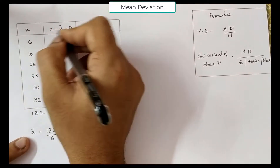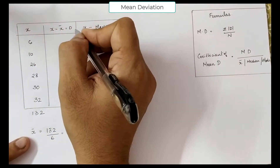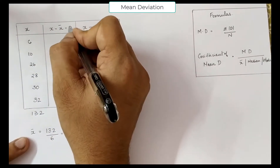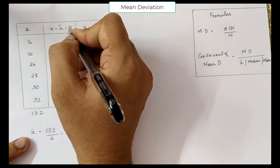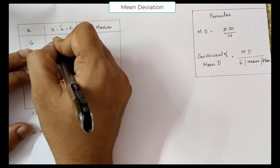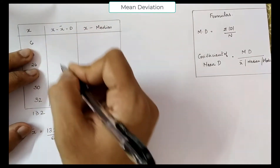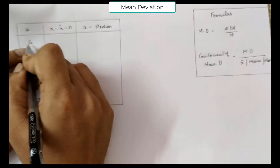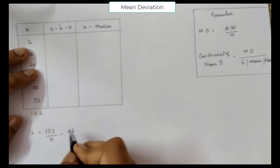Now, what is the mean deviation? That is called D. Here we find X minus X̄. X̄ is 22.